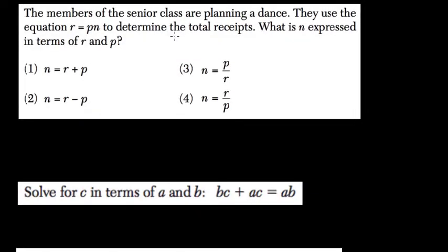The members of the senior class of Planning and Dance use the equation R equals P times N for determining the total receipts. What is N expressed in terms of R and P?